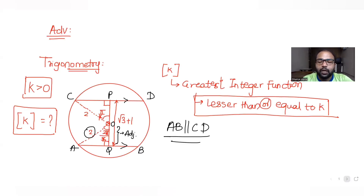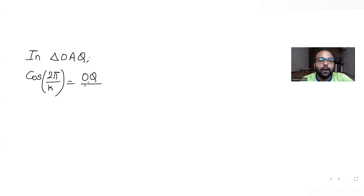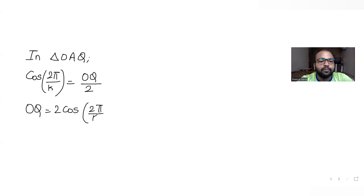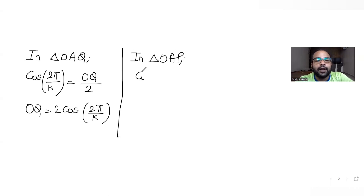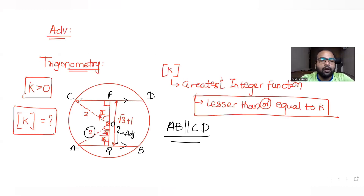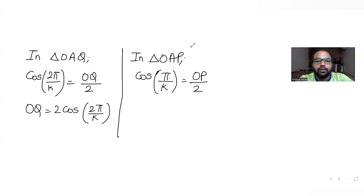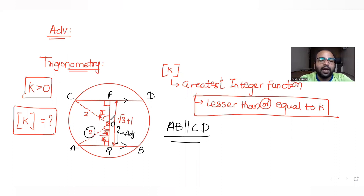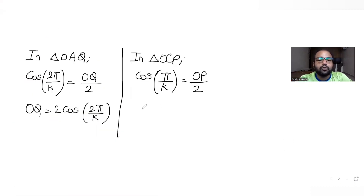For the chord subtending 2π/k at the center: cos(2π/k) = OQ / 2, so OQ = 2·cos(2π/k). Similarly, in triangle OCP, for the chord subtending π/k: cos(π/k) = OP / 2, so OP = 2·cos(π/k).